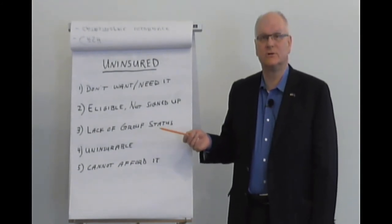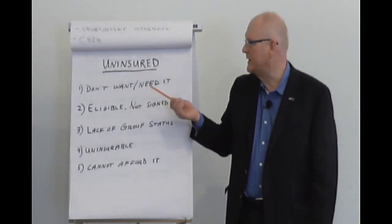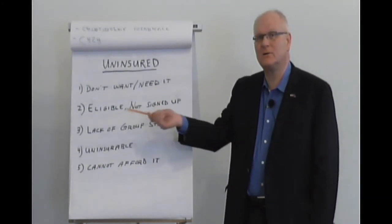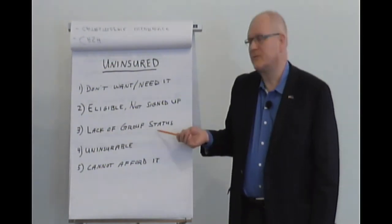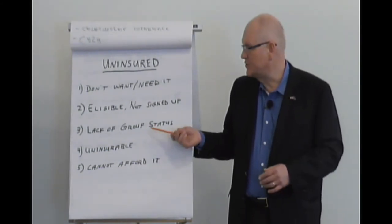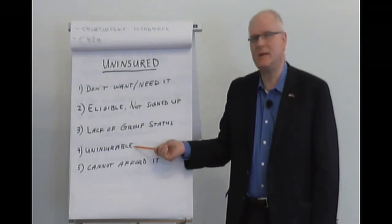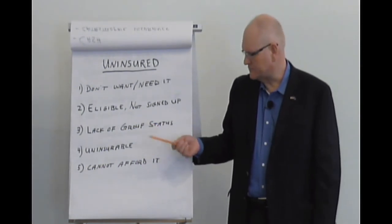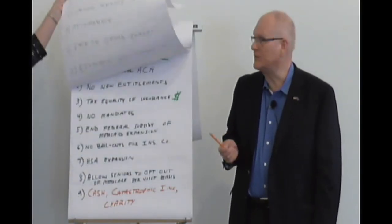Now, why are some people uninsured? Well, that's a good question. Some people don't want insurance. They don't want it, they don't believe in it, they just don't want it, or they don't need it. Many people are eligible, but not signed up. You can't force people to do something, but the government thinks you can. Lack of group status. Again, there's the individual market, group market, all these insurance terms. But as I've showed you some solutions, you can increase the amount of people in the group market without government interference. Some people are uninsurable, you just have diseases that statistically make you uninsurable. Well, and there are people that simply can't afford it. We have solutions that don't involve the government for all of these things.